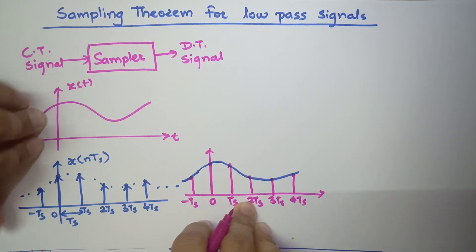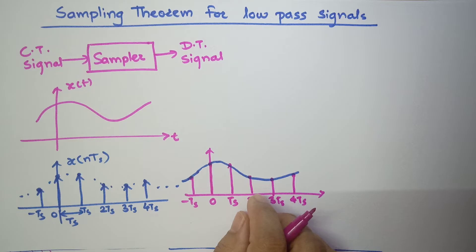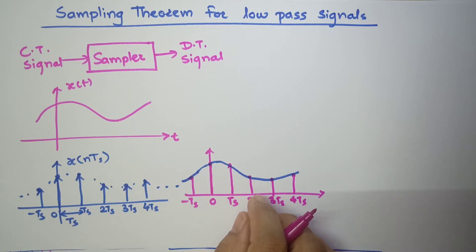Now, what is the importance of sampling? We know that in digital communication we require a discrete time signal. In this digital age, all signals are in digital form. In the process of digitization, the first step is sampling and the second step is quantization. So for digital signal processing, sampling is a very basic step.